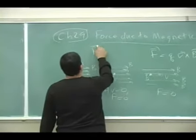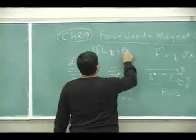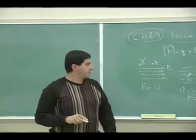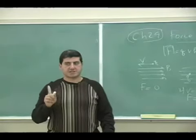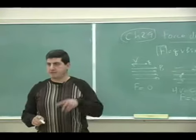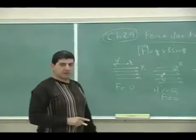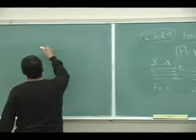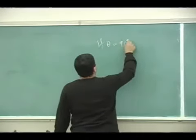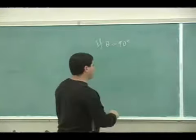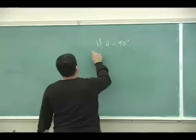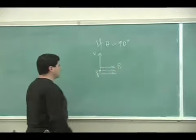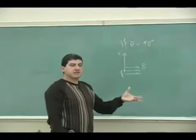The only time it feels anything, you see here, if you look at the magnitude of the cross product, it's QVB sine of theta. The only time it feels a force is if there's an angle between V and the B. So let's take those cases. The simplest case is if the angle is 90. If theta is 90, that's the simplest case. What happens now? Let's say V is like this, and B is like that.